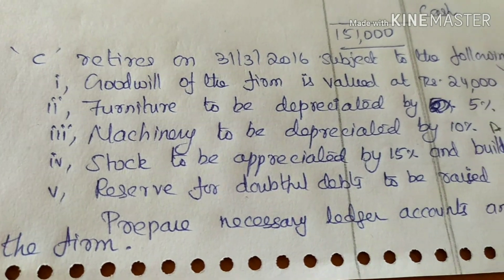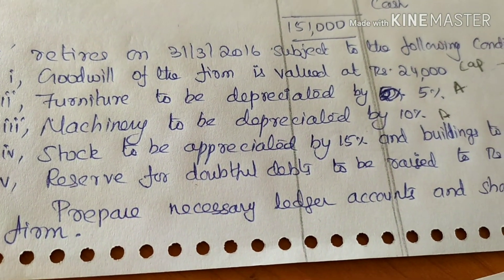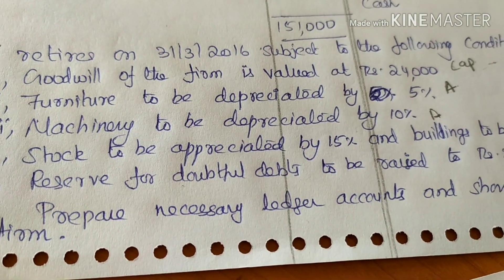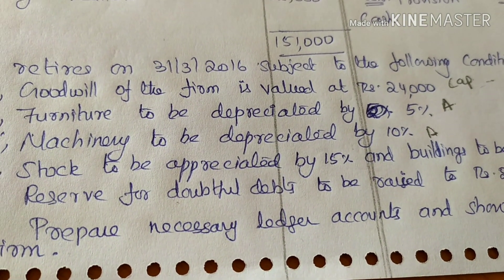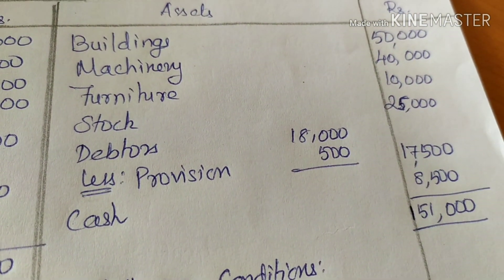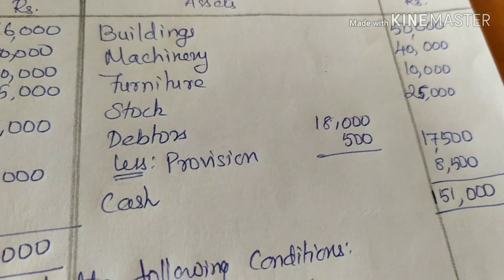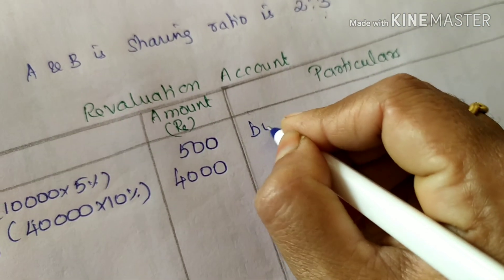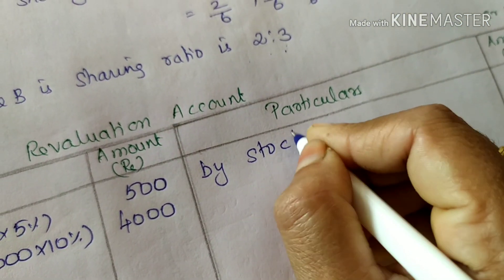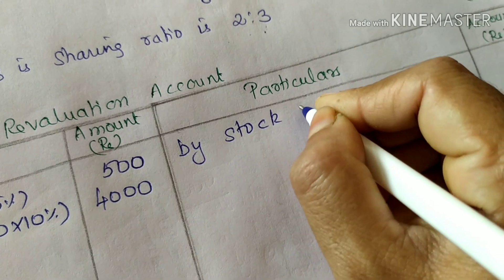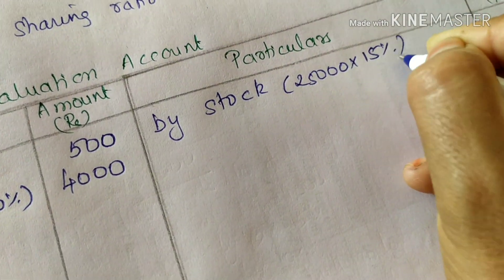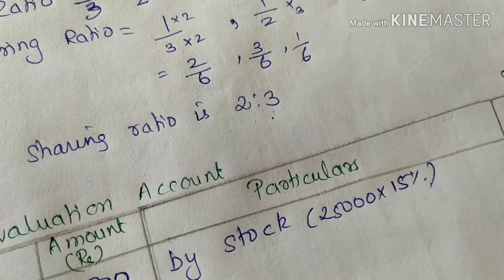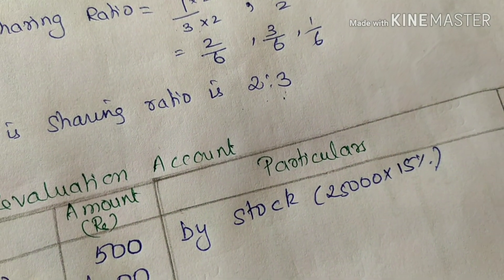Next, stock is to be appreciated. Stock appreciation is 15%. Stock value is 25,000. So 25,000 into 15% = 3,750. Stock appreciation is 3,750.